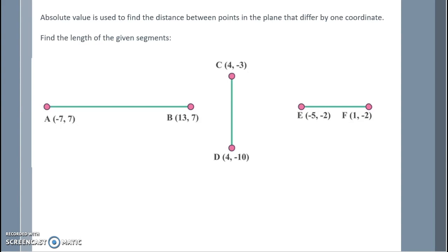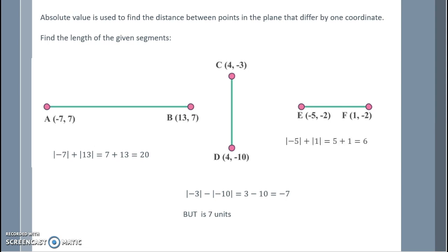Absolute value is used to find the difference between points. Point A is at negative 7, 7 and 13, 7 — y-values are the same, so we have a horizontal change. The absolute values: 7 plus 13 gives a distance of 20. Points C to D share the same x-value, so y-values change. The absolute value of negative 3 minus the absolute value of negative 10 is 3 minus 10, which is negative 7 — but distance is always positive, so it is 7 units. Finally, moving left and right, the absolute value of negative 5 plus the absolute value of 1 is 5 plus 1, which equals 6.